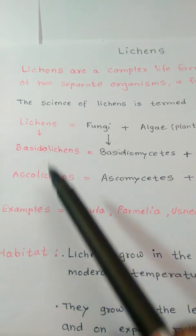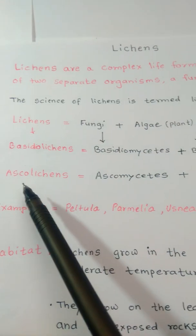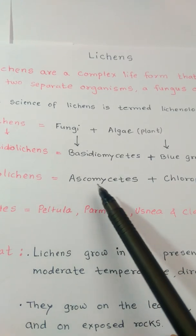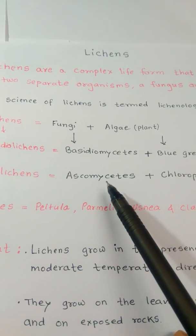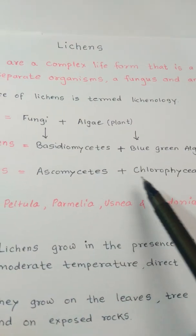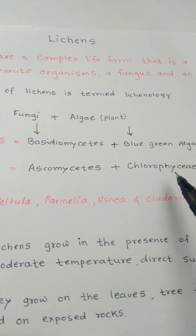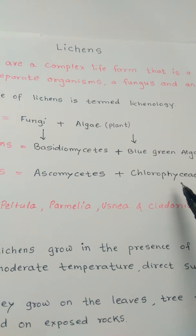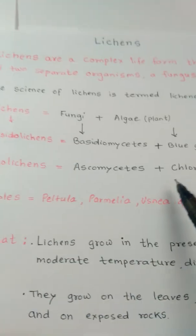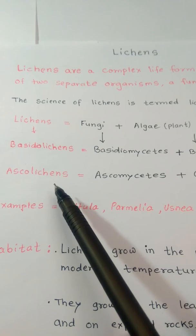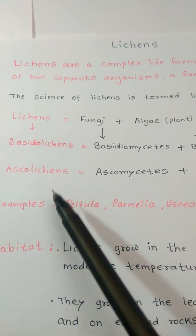The other type is Ascolichens. In Ascolichens, there is Ascomycetes as the Fungus partner, along with the Chlorophyceae family as the algal partner. When these two partners come together, they form Ascolichens.